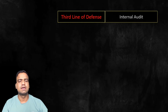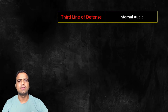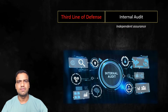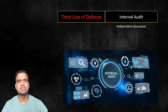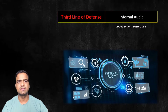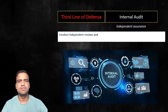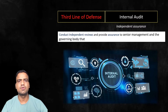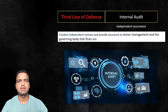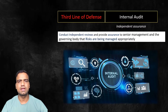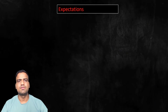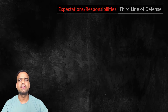The third line of defense is the internal audit function. It plays a crucial role in ensuring the effectiveness of an organization's risk management practices. By conducting independent reviews, audit provides assurance to senior management and the governing body that the organization's risk management program is operating effectively and that risks are being managed appropriately.